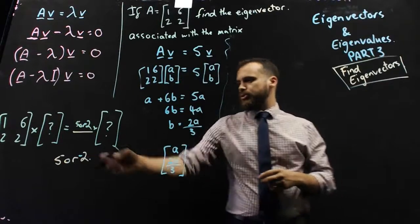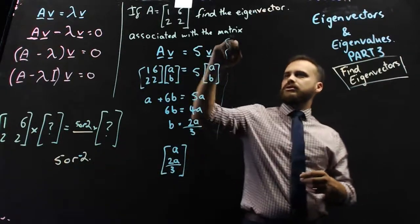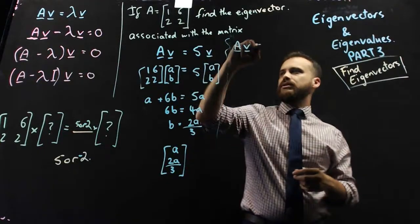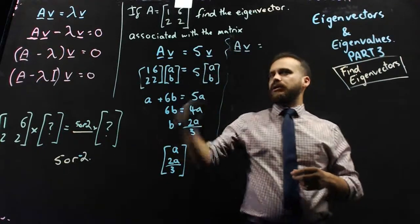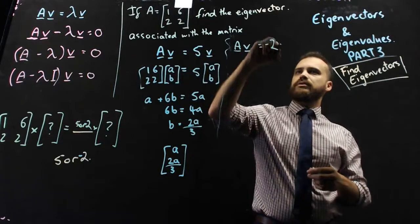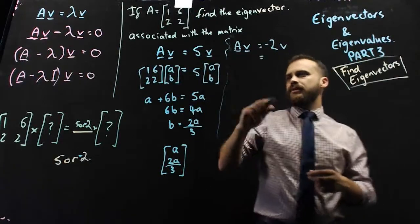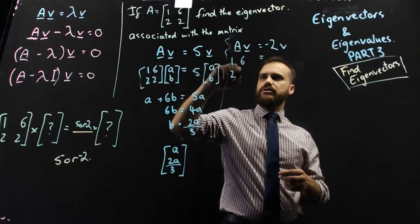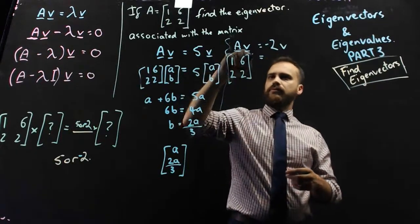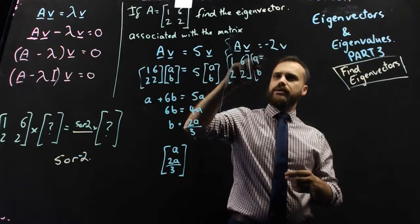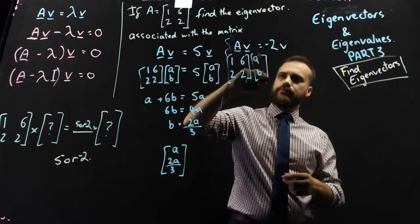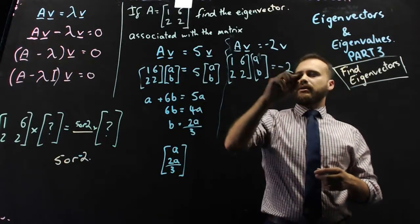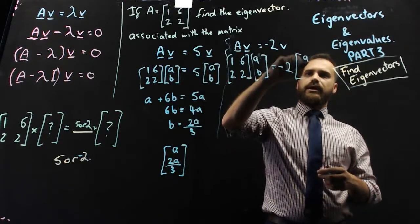Now, of course, we have two answers, 5 or negative 2, so we can say that Av equals lambda of negative 2v, and we can go through our same procedure here, 1, 6, 2, 2, a, b is going to be equal to negative 2ab.